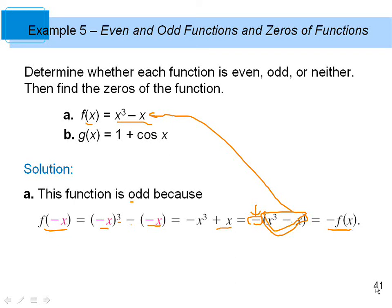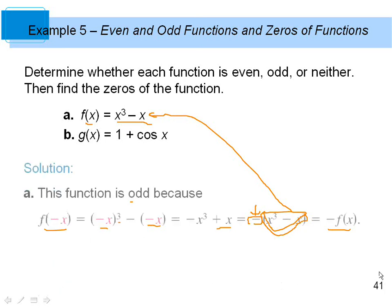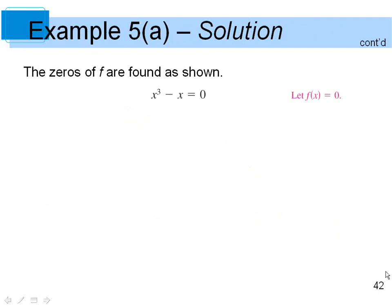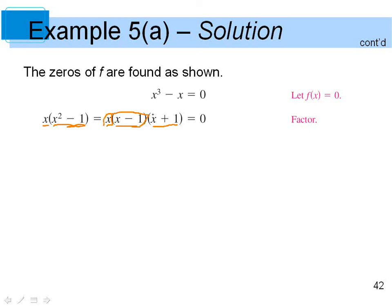Now let's find the zeros of f of x equals x cubed minus x. Set f of x equal to zero: x cubed minus x equals zero. Factor out x: x times (x squared minus 1) equals zero. That's the difference of two squares: x times (x minus 1) times (x plus 1) equals zero. Setting each factor equal to zero, the zeros are x equals 0, x equals 1, and x equals negative 1.